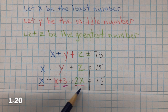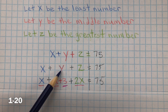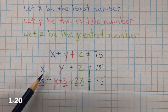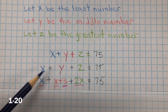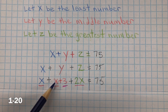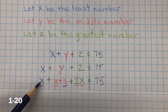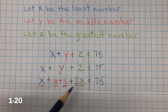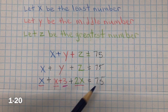We also know the middle number, Y. The middle number is three more than the least number, so it's three more than X — we write Y as X plus 3. And X, the least number, is just X. We know that the sum of these three numbers equals 75.